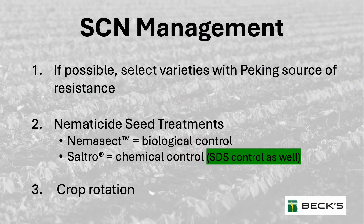The last control measure is real rotation. Corn and wheat are not host crops to soybean cyst nematode. So the longer we remain out of soybeans, the more successful we are going to be at lowering those populations. But keep in mind, if you just go from soybeans to corn back to soybeans, I wouldn't expect your populations to diminish overnight. It's that extensive time maintaining a non-host crop that's going to be much more effective at lowering those cyst nematode populations.